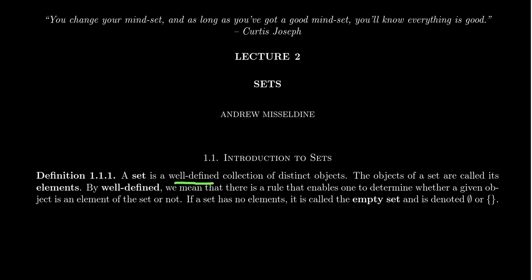What does this word well-defined mean? We'll get into this more at the end of this lecture when we talk about Russell's paradox. For the moment, well-defined means that there's a rule that enables one to determine whether a given element belongs to the set or not. There has to be a way to decide: does object A belong to the set or not? A set will be well-defined so that there is always some rule, property, or algorithm that determines whether the object belongs to the set.